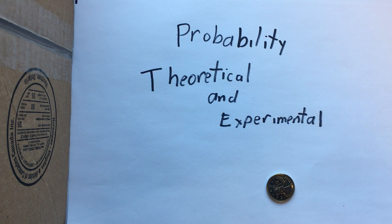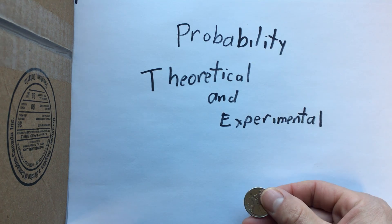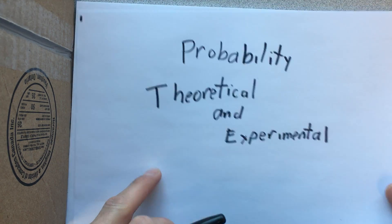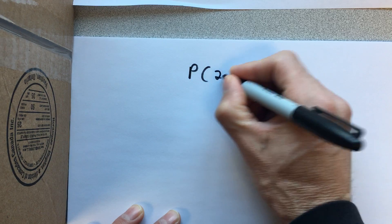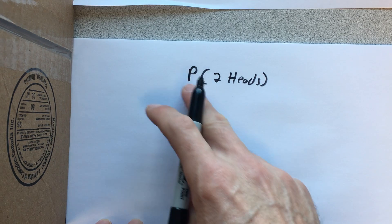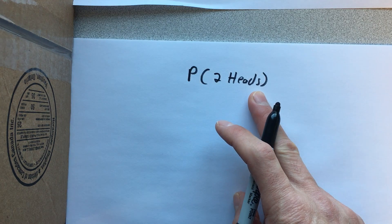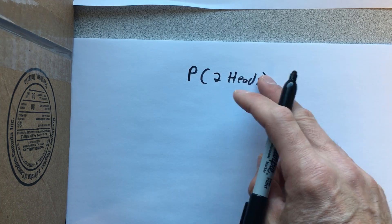This is a quick overview of theoretical and experimental probability. I'm going to solve the problem of finding the probability that you get heads twice when you throw a coin twice. In probability notation, you write P for probability and then in brackets the thing you're finding the probability of — for example, if you're looking for the probability a team wins a game, you write P(win).